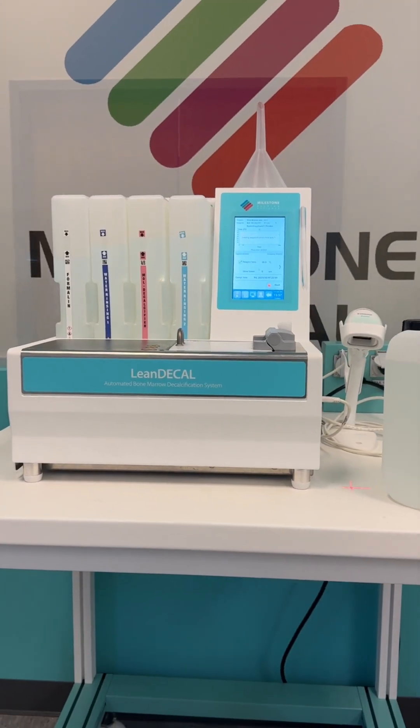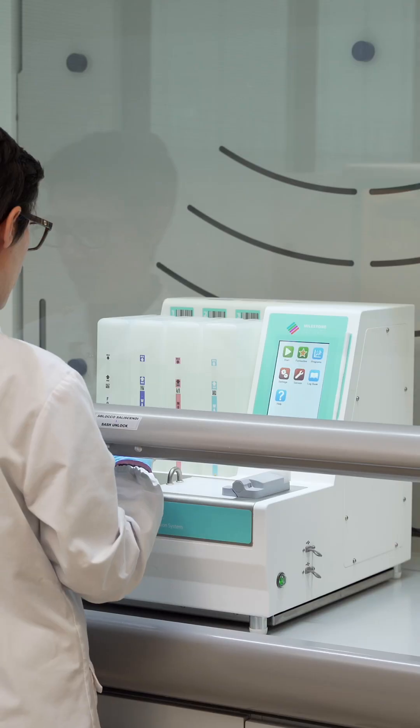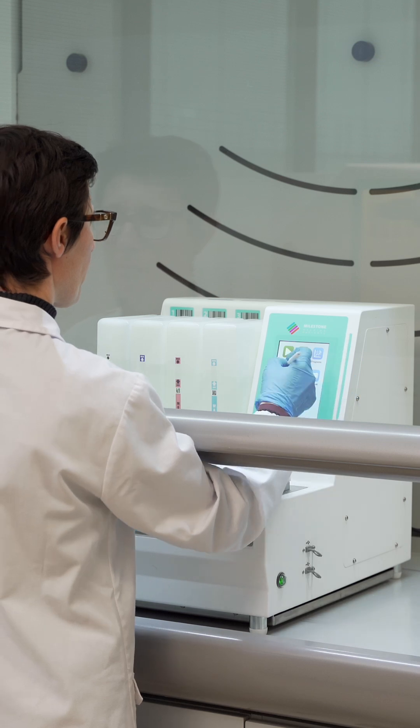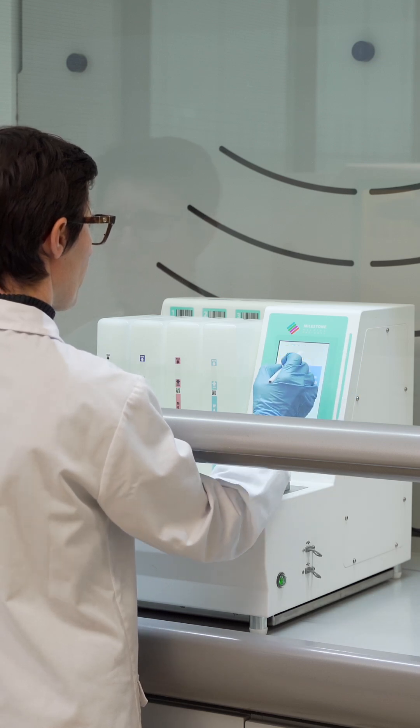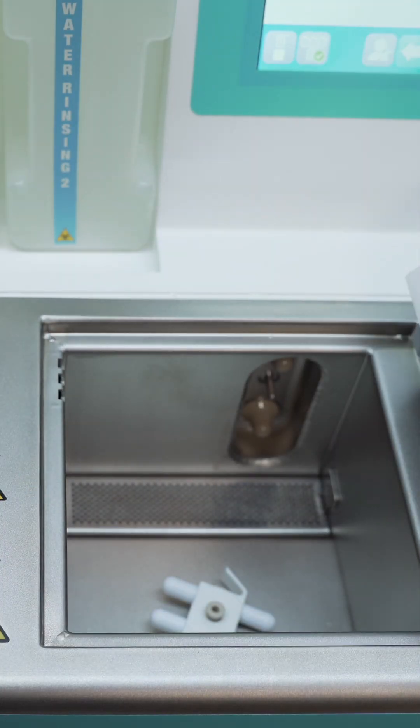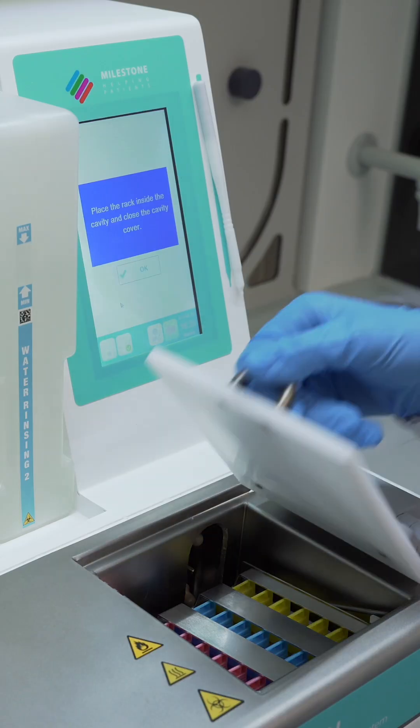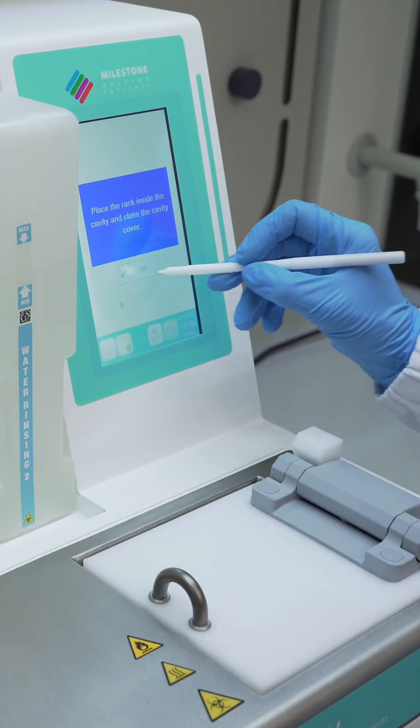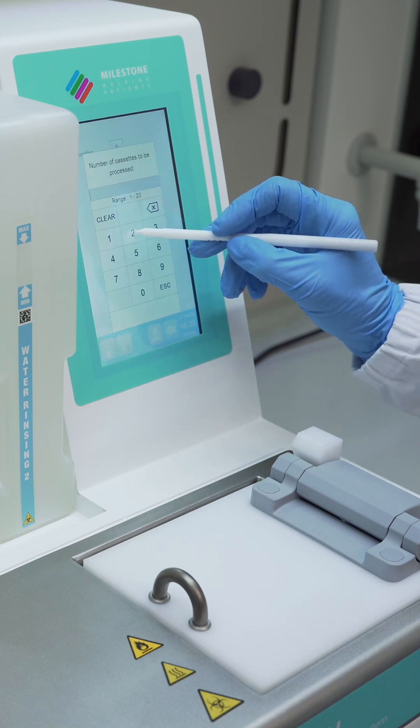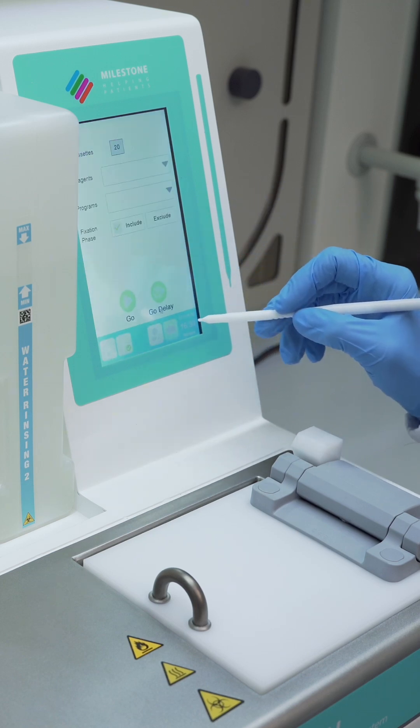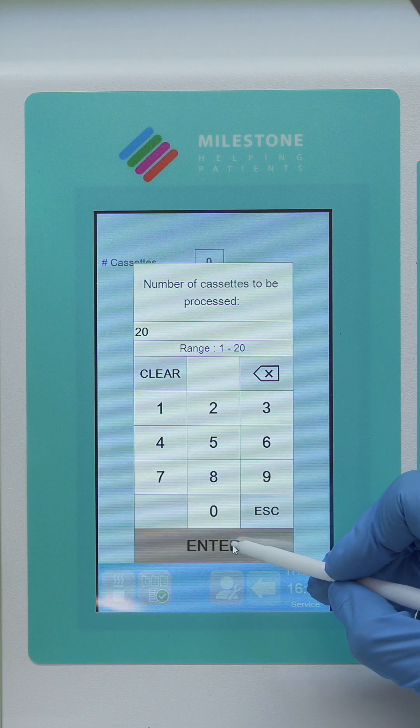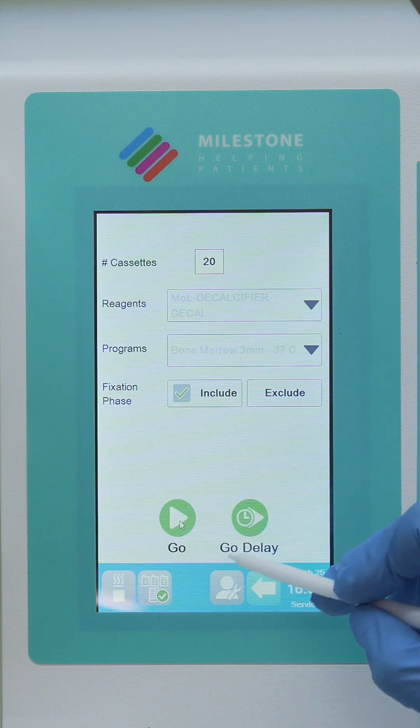Milestone products like Lean Decal and Decalmate use a safer, more precise approach to decalcification, pairing EDTA chelation with intelligent systems that heat, maintain constant temperature, and document every step for complete process traceability. Instead of breaking down calcium with strong acids, EDTA gently binds and removes calcium ions, preserving the structure of your specimen.